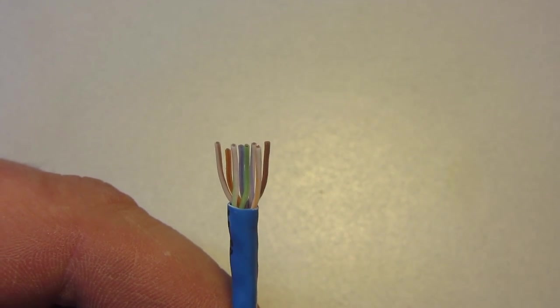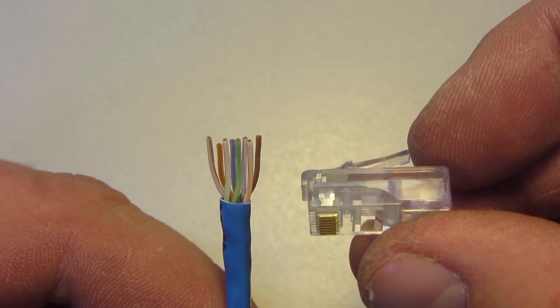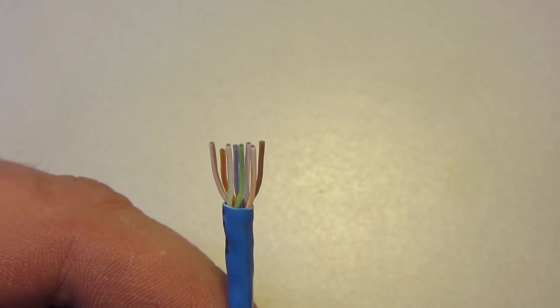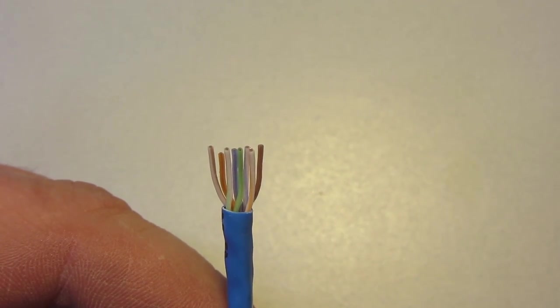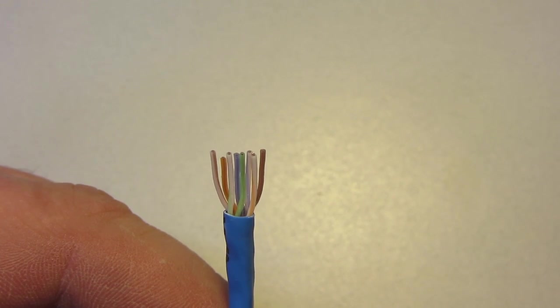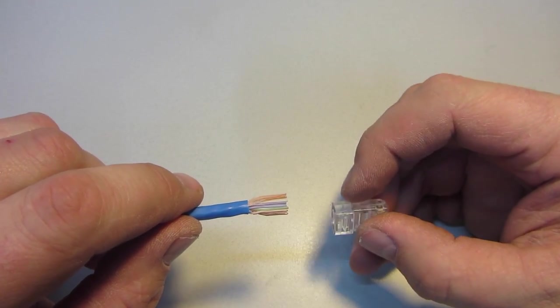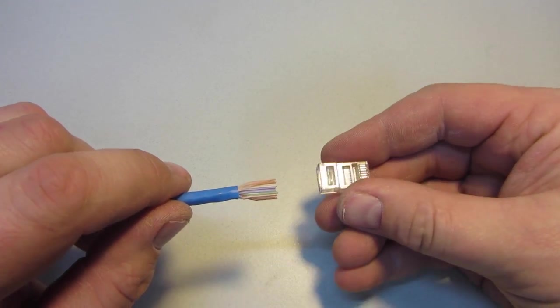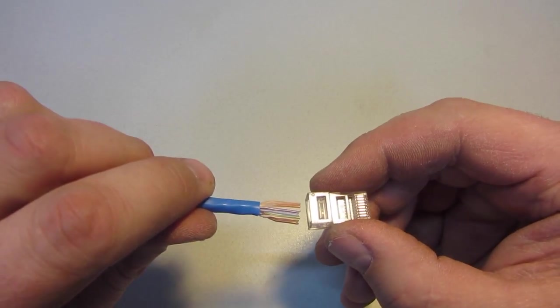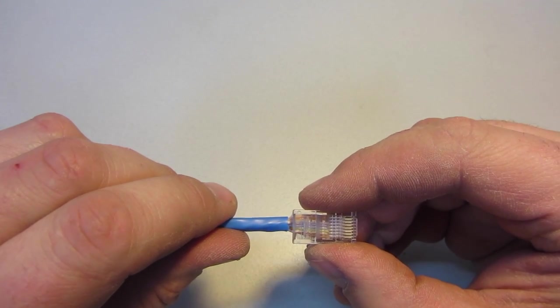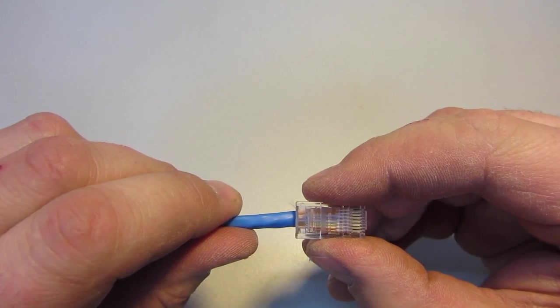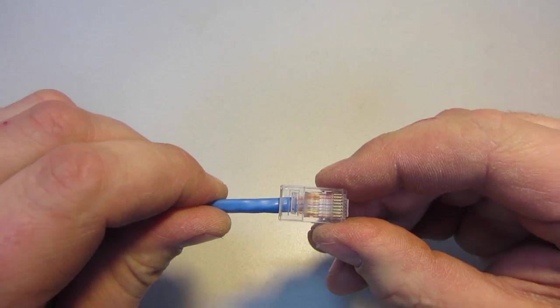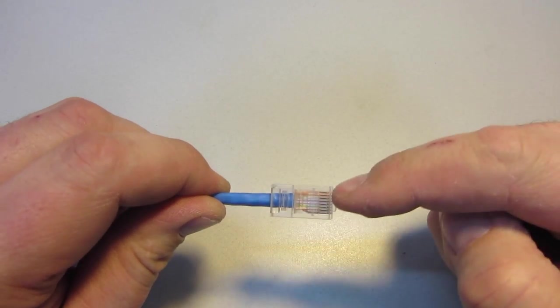Before you insert this into the RJ45 connector, double-check to make sure that these wires are in the proper order of color. Take the RJ45 connector tab down and insert the cable. Each individual wire will go in its individual spot. Make sure it is all the way to the very end.